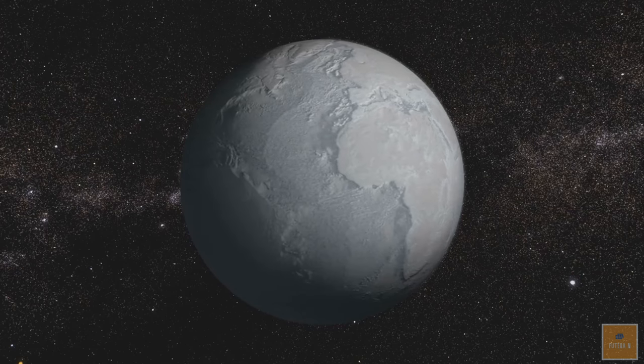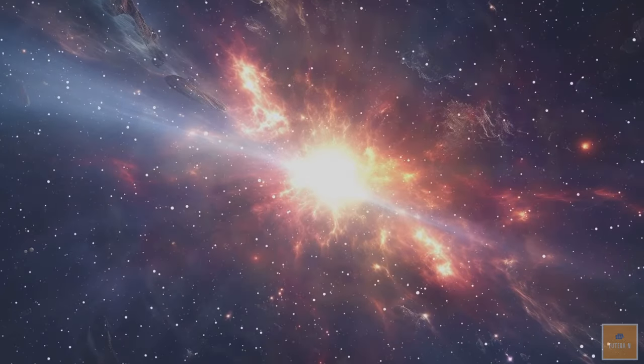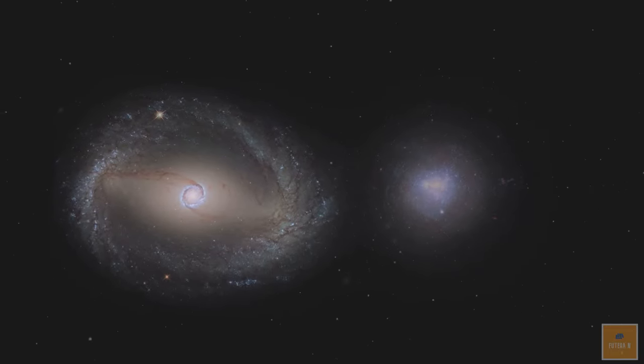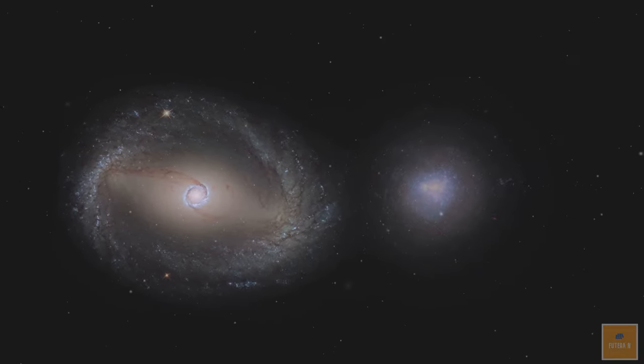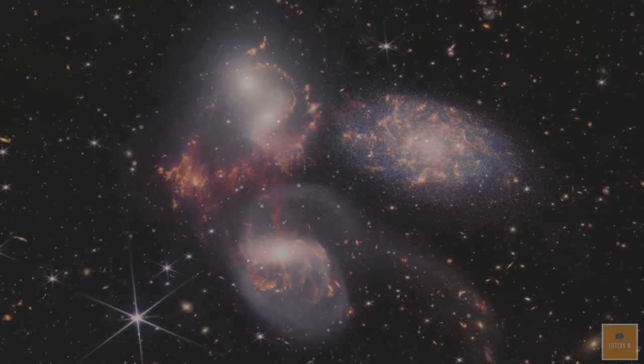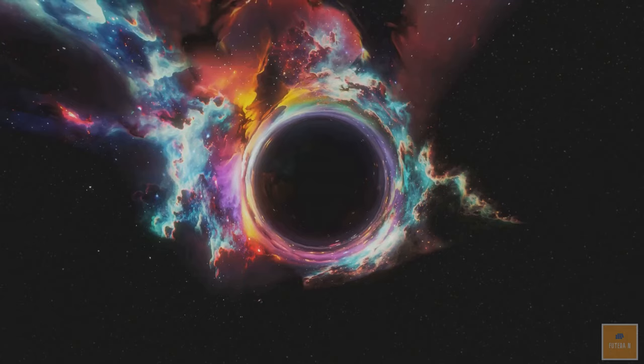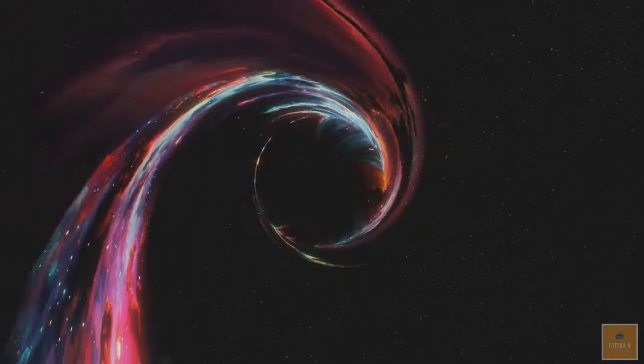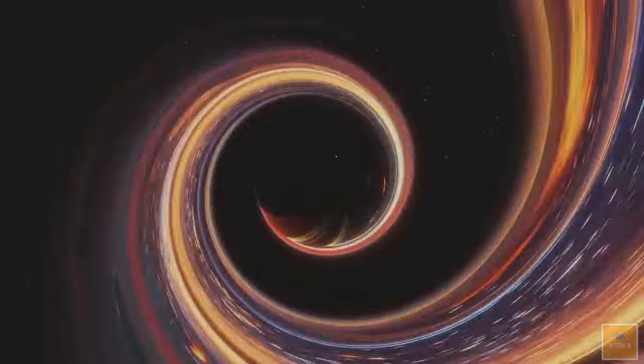Next, we have the big crunch. This one's a bit more dramatic. Instead of expanding forever, what if the universe's expansion slows down and reverses? Gravity would pull everything back together, causing galaxies to collide and merge. Eventually, the universe would collapse into a super-dense, hot, singular point, kind of like a reverse Big Bang. Everything we know would be crunched into an infinitely small space.